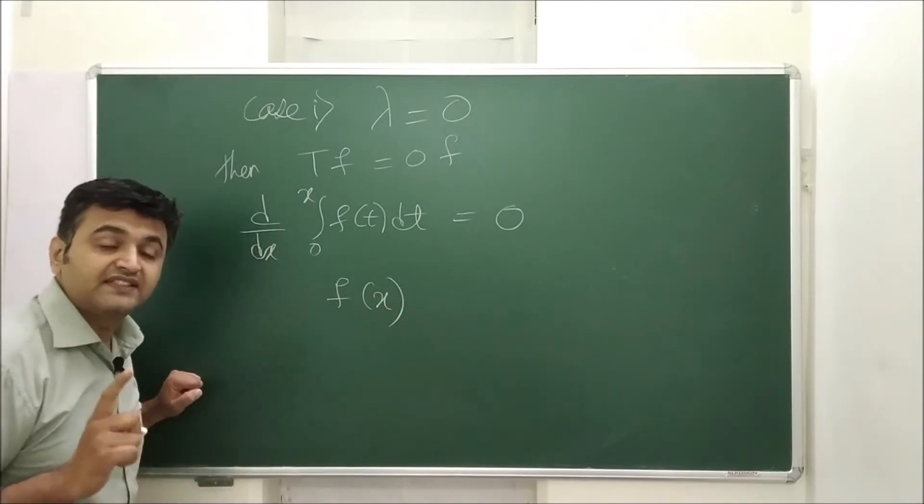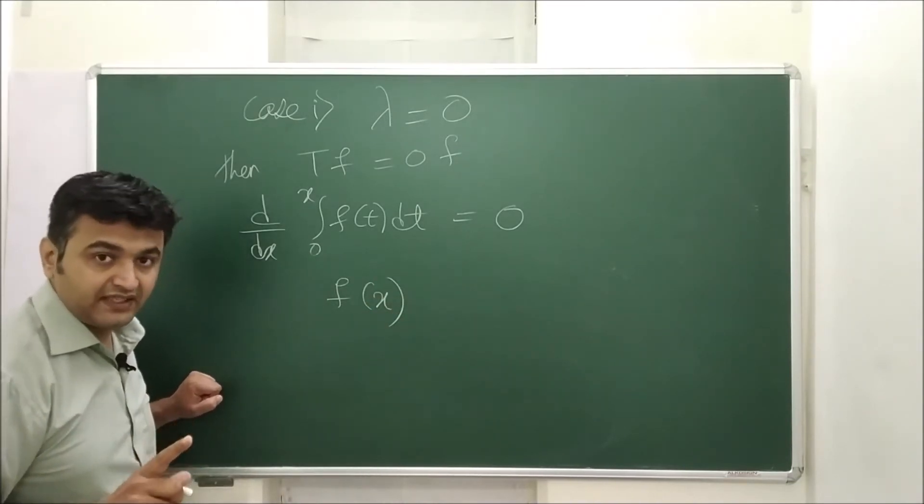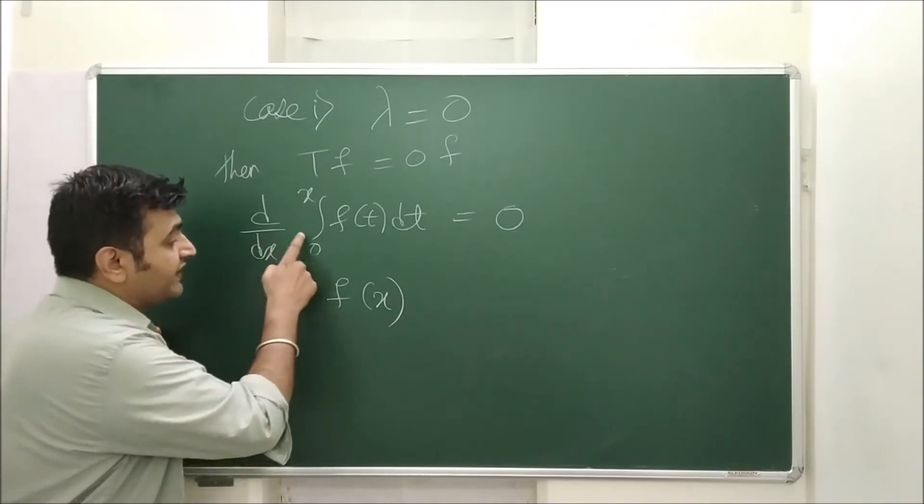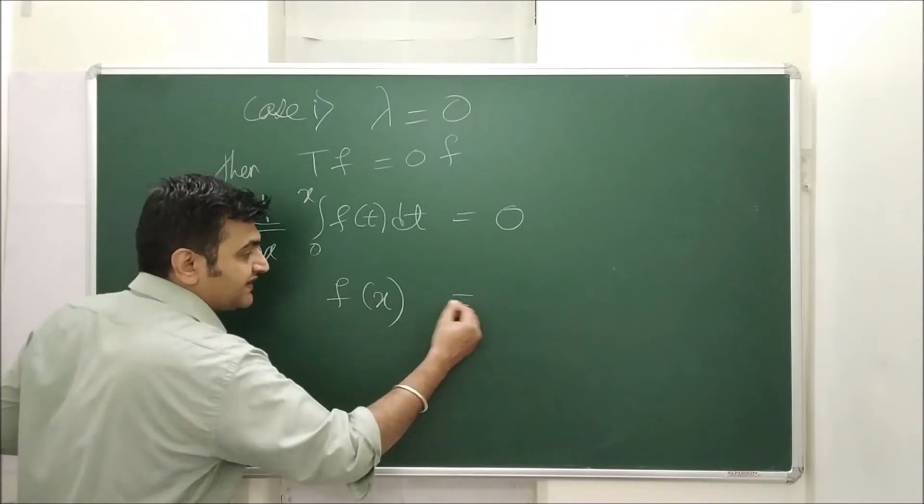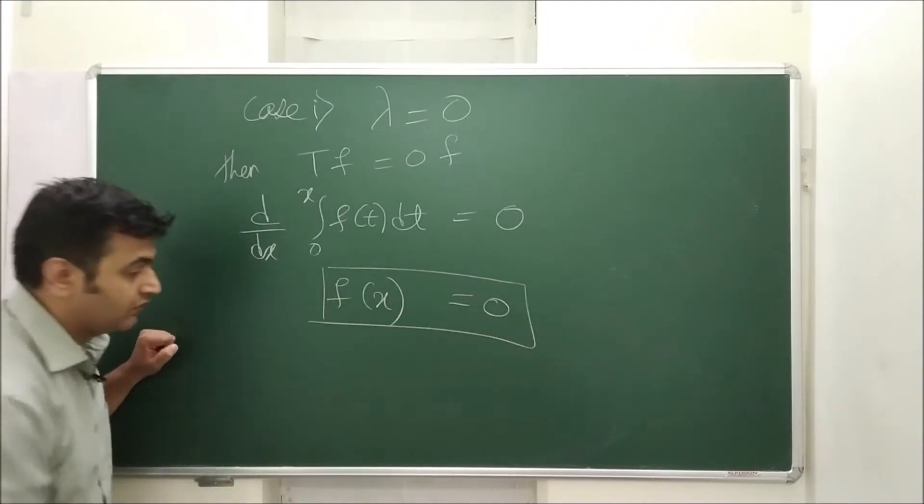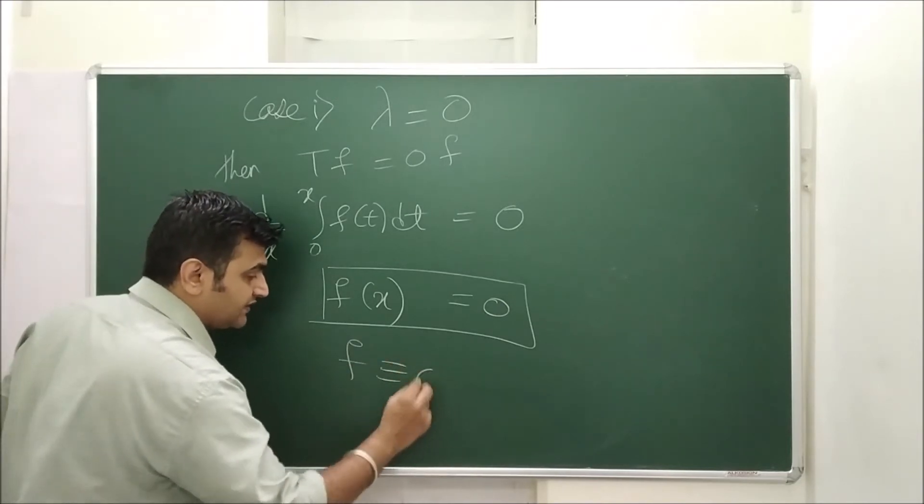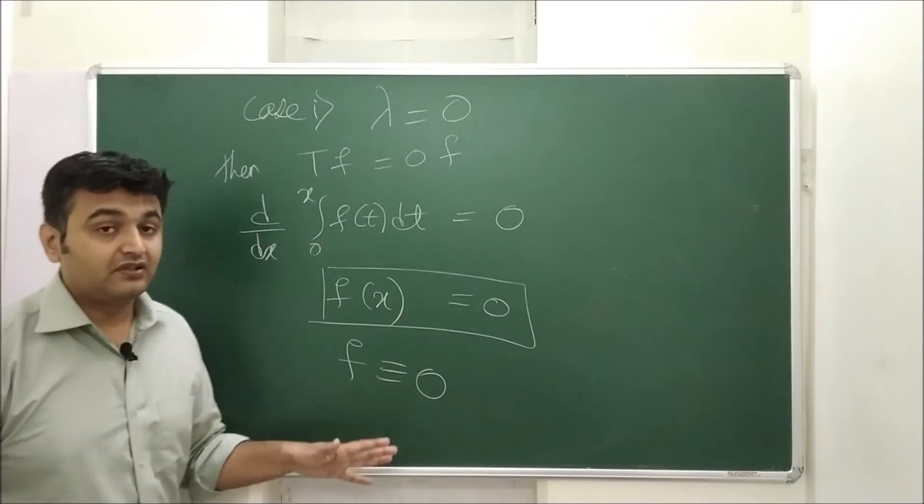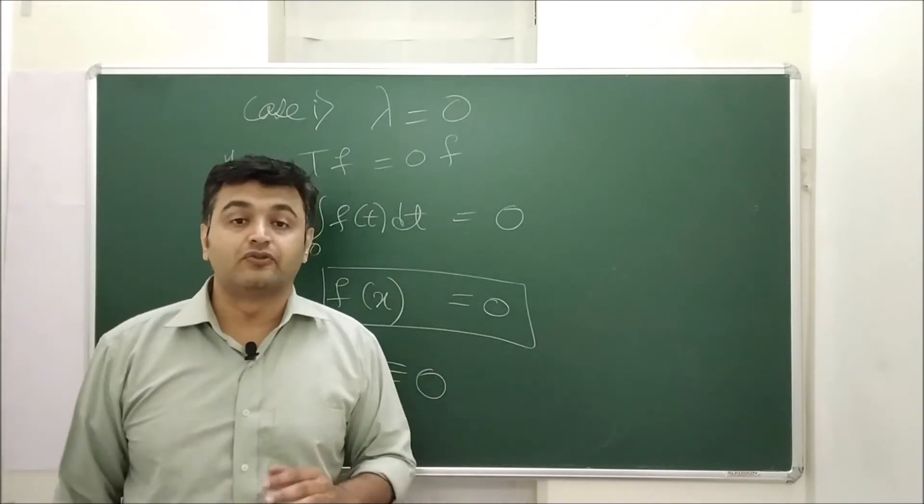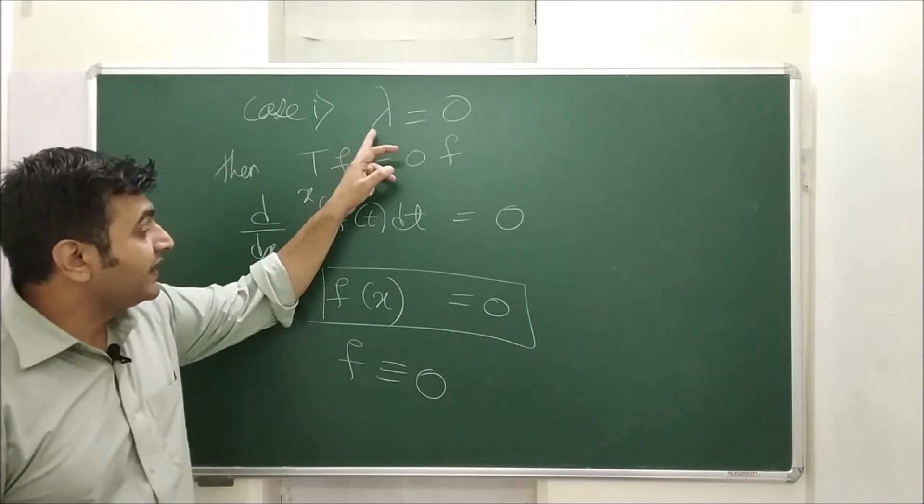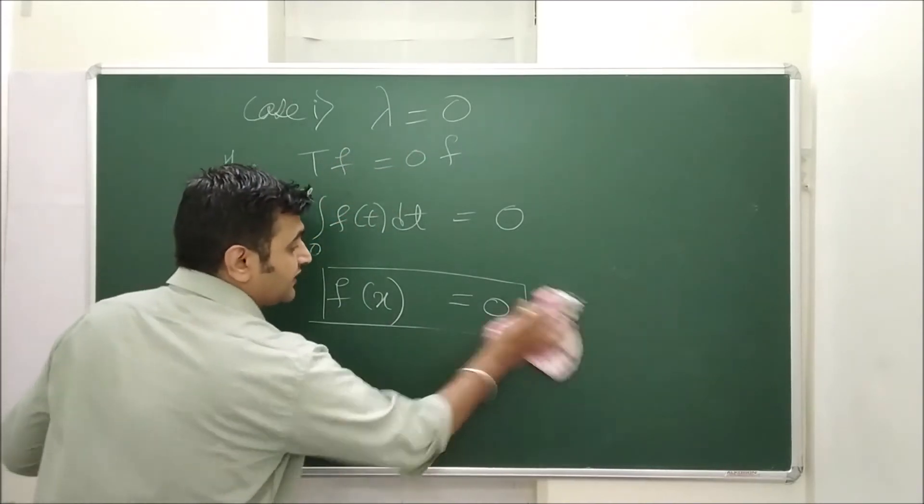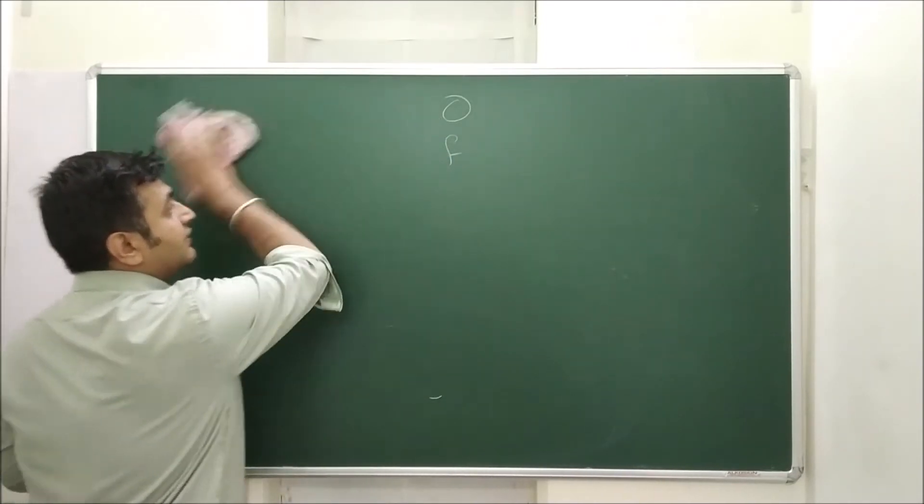If you don't know what is FTC 1 then my suggestion is you please see that lecture. Link you can find in the description. So derivative of integration is integrand and this is my 0 only. So what I'm getting is my function is identically 0. I'm getting f to be 0. But is this possible? No. Why? Because my f is an eigenvector and eigenvectors are always non-zero. So therefore lambda equal to 0 case is not possible. Therefore for this transformation 0 can never be an eigenvalue.